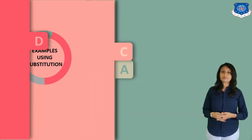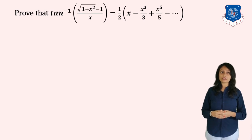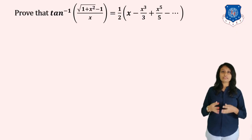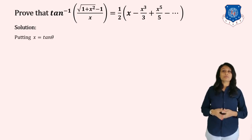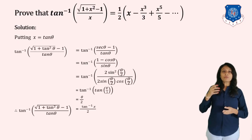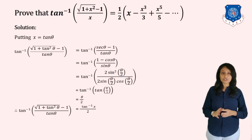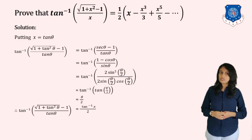Next example using substitution: prove that tan⁻¹[(√(1+x²)−1)/x] = (1/2)(x − x³/3 + x⁵/5 − …). For this type of example, we suppose x = tan θ. Substituting, we get tan⁻¹[(√(1+tan²θ)−1)/tan θ] = tan⁻¹[(sec θ−1)/tan θ]. Converting to sin and cos: sec θ = 1/cos θ, tan θ = sin θ/cos θ, giving tan⁻¹[(1−cos θ)/sin θ].